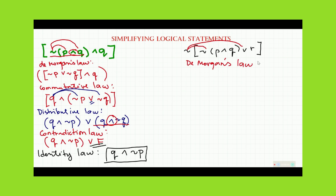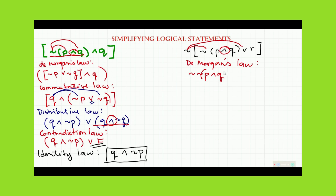Using De Morgan's law, we flip the connector. We get negation negation of P and Q — taking that group together — and since the outer connector was 'or', we flip it to 'and', giving us 'and negation R'.